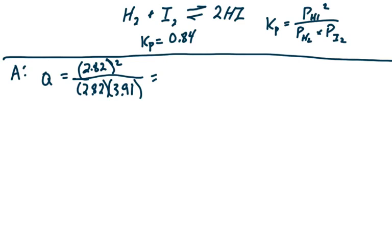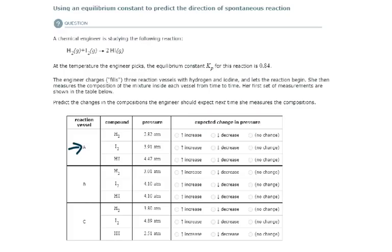And so what I get for a reaction quotient here is 0.721, which is less than the Kp of 0.84. So that means that this reaction is going to be favored to the right to produce more product than reactants are formed. So if I go back here, because products are favored, what's my product, hydrogen iodide.